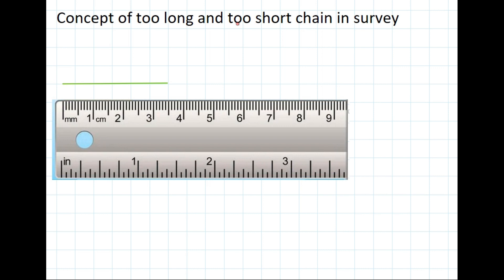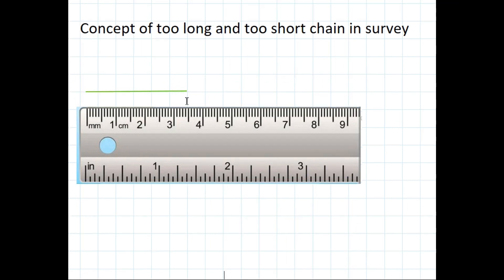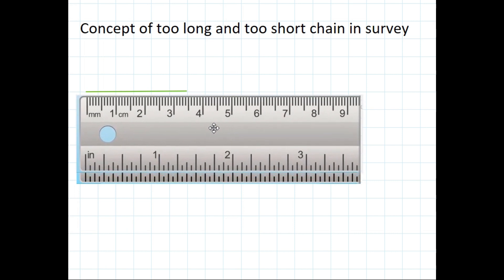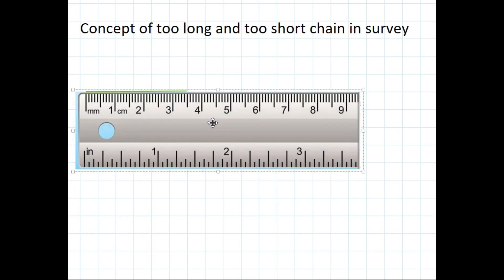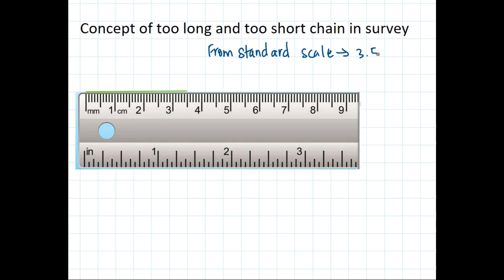Let's say here is a straight line to be measured in the field. Let's measure this with a standard scale. Measuring this line with the standard scale, it comes out to around 3.5 centimeter. So from the standard scale, it is 3.5 centimeter.